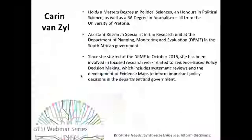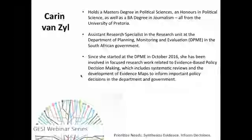We will have Karine Van Zeele with us today. Karine holds a master's degree in political sciences and a BA degree in journalism, all from the University of Pretoria. She is an assistant research specialist in the research unit at the Department of Planning, Monitoring and Evaluation (DPME), the South African government. Since she started at DPME in October 2016, she has been involved in evidence-based policy decision making, including systematic reviews and the development of evidence maps.